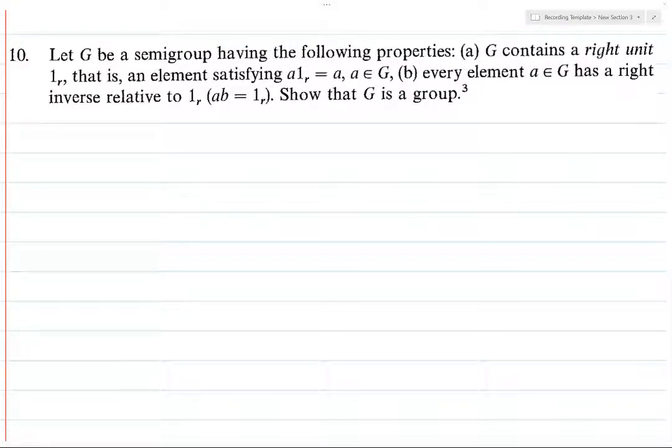Alright, let's suppose that we have a semigroup with a right unit and every element has a right inverse. Remember, a semigroup is just a monoid, but we don't assume that we have a unit. It's just a set with an associative binary operation. That's all you have. So we want to show that this is a group.